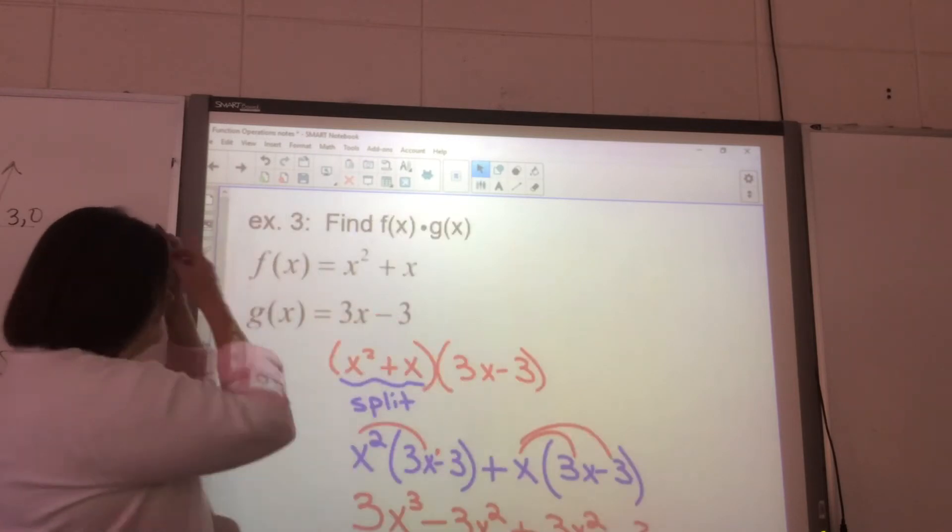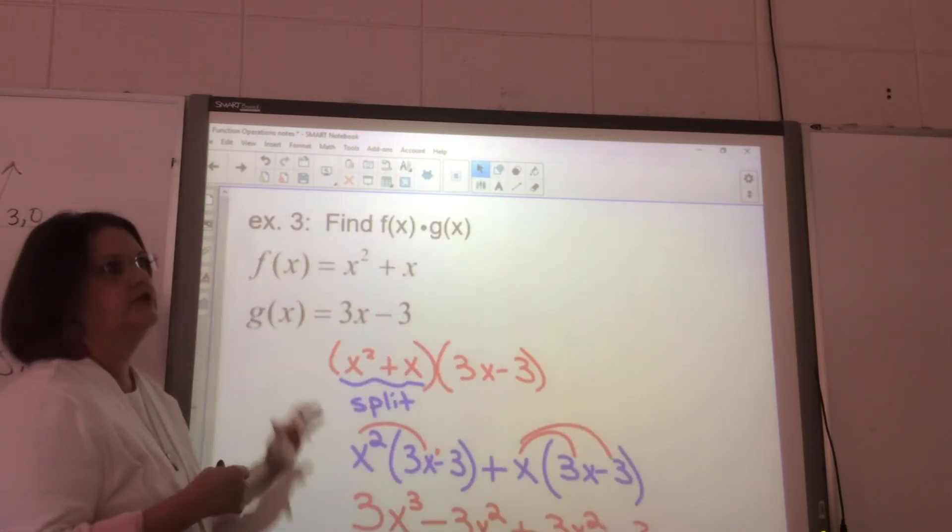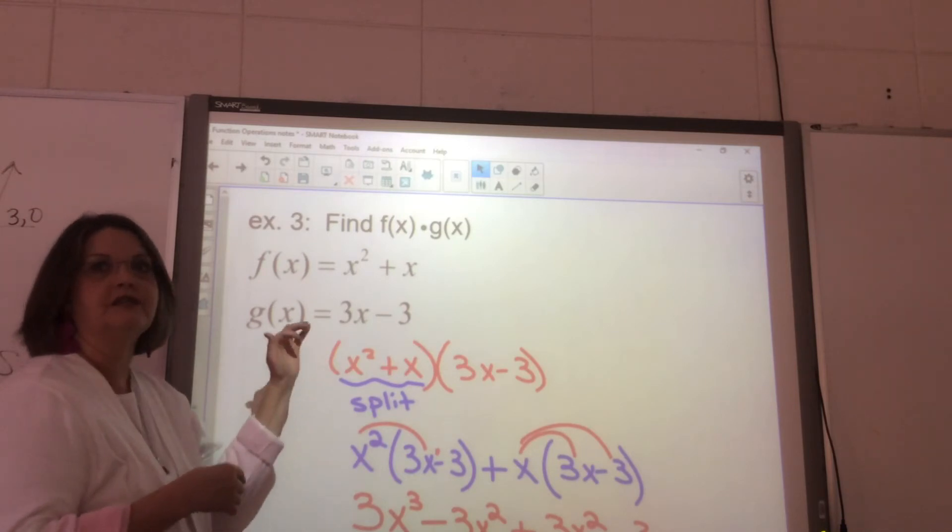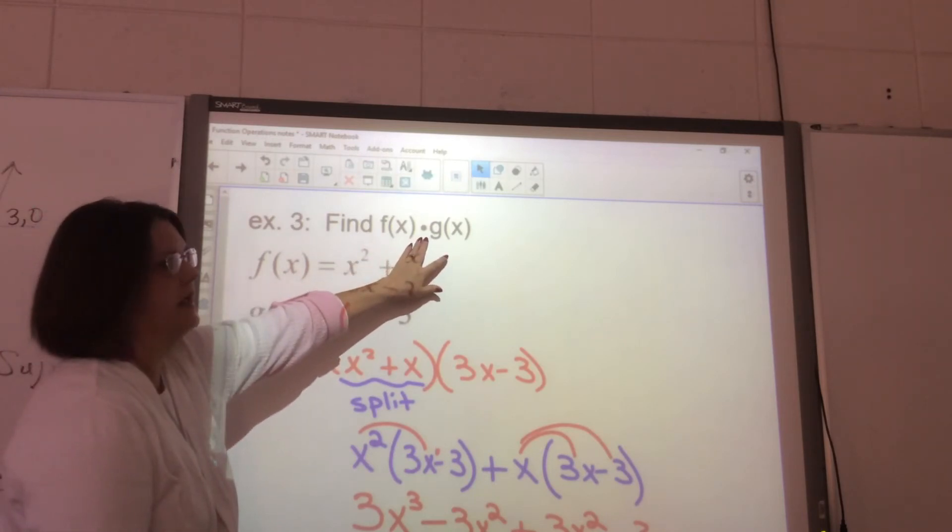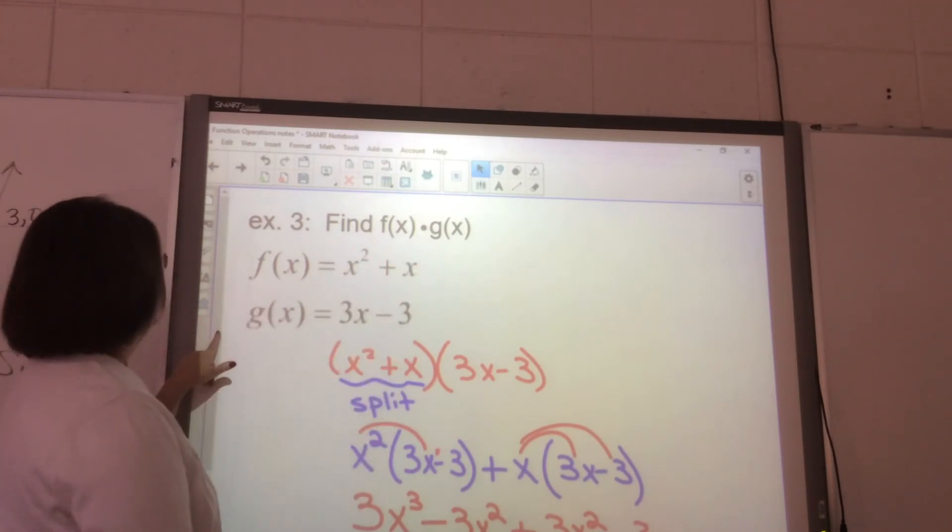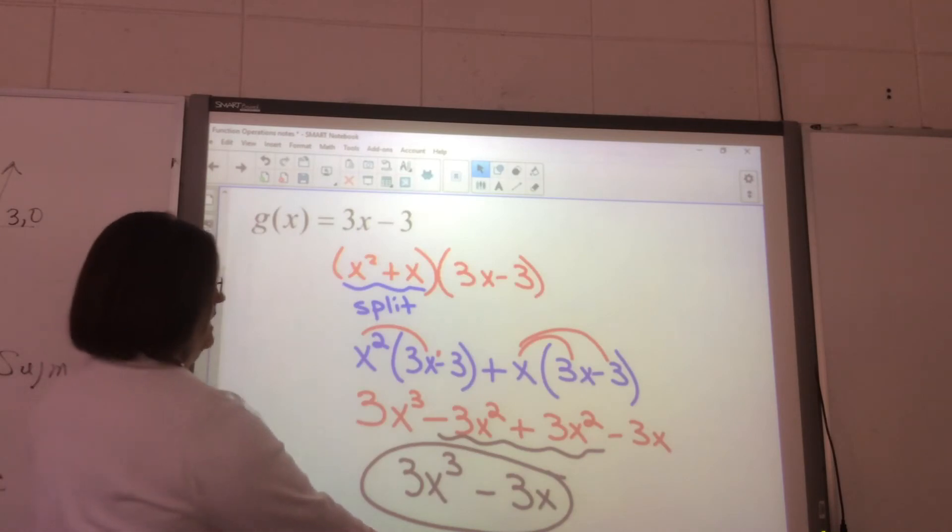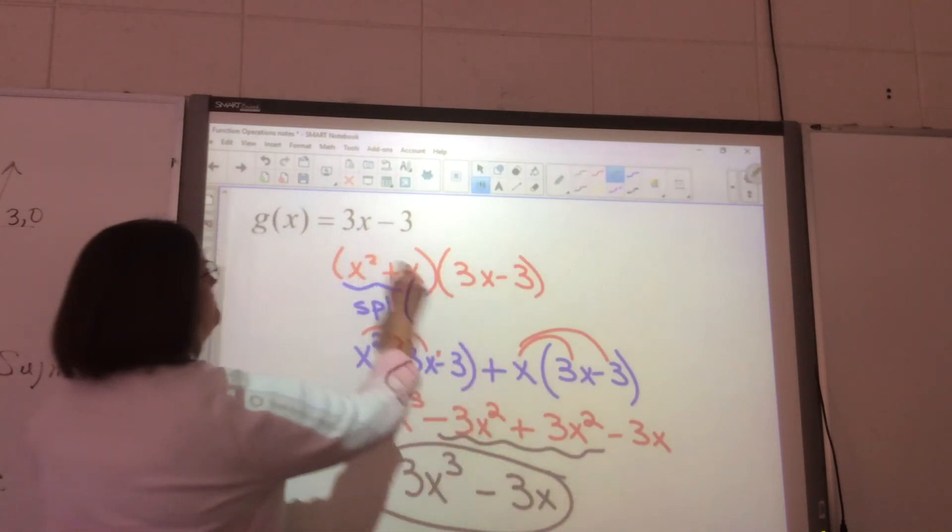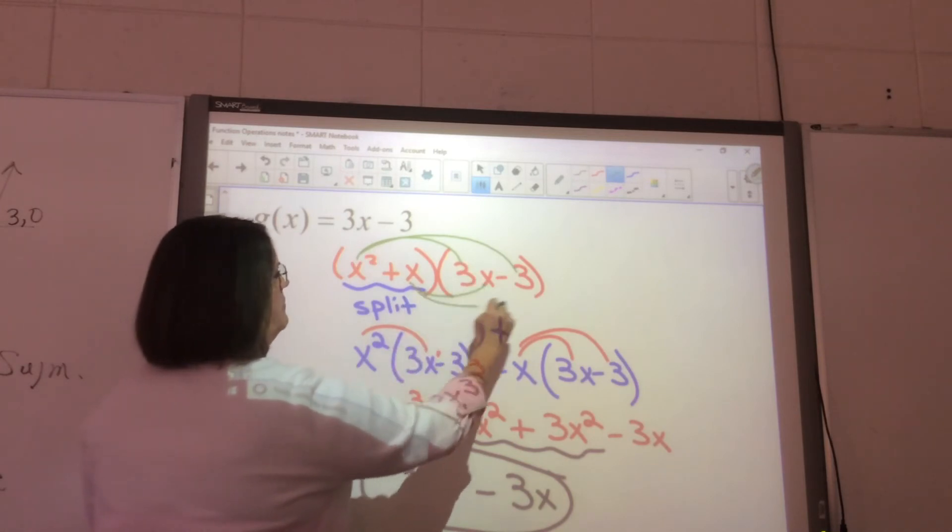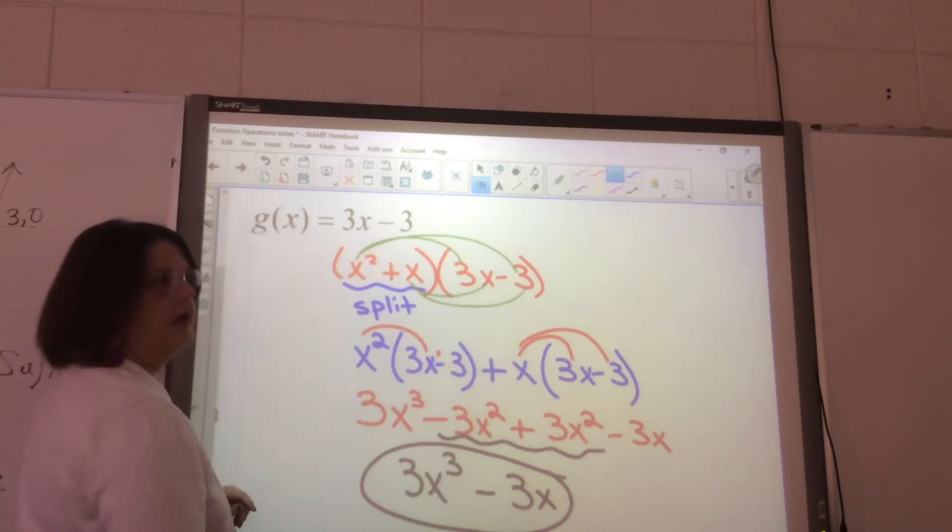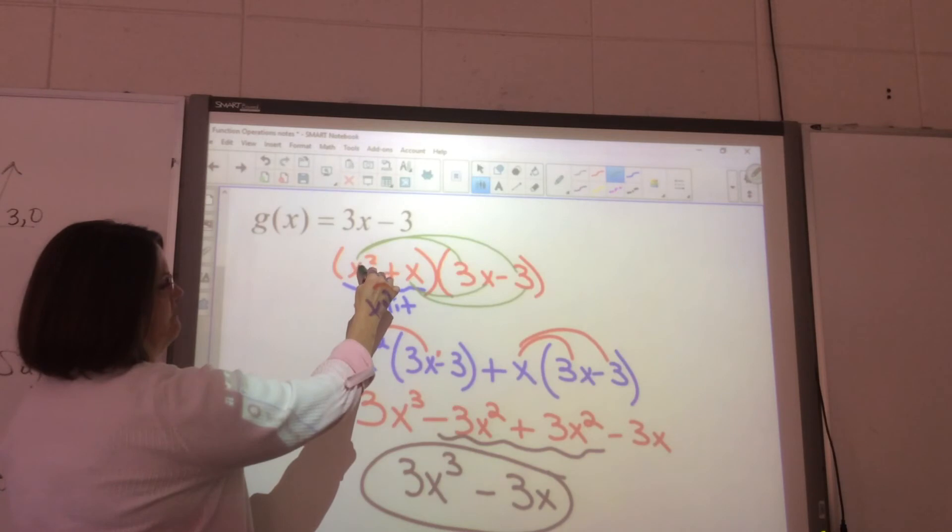Sometimes they tell you to multiply. Now, some of this you did at the beginning of the year; you just didn't see it in this format. Here's f(x) and here's g(x), and we are multiplying f(x) times g(x). Remember, you're taking the first one and multiplying it by both of those—that's what this is. Then taking the second one and multiplying it by both of these.